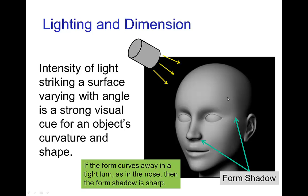Notice that the head has a fairly smooth curvature, and we have a gradual darkening, whereas say around the nose, it's a much tighter curve. And so we have much more contrast from the bright parts to the darker parts say around the nose.